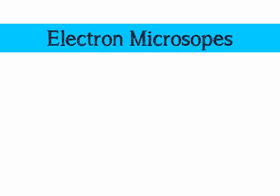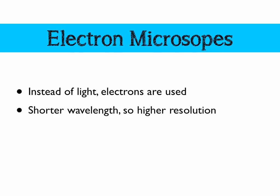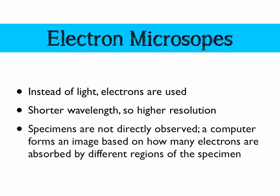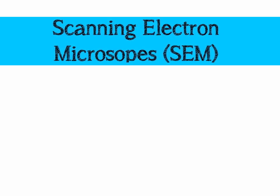Now let's start on electron microscopes. Instead of light, we use electrons. Electrons have a much shorter wavelength, which allows us to resolve things that are much closer together, giving us a much higher resolution. We don't look directly at the specimens — there's no eyepiece on an electron microscope. Instead, a computer is attached and forms an image based on the density of electrons absorbed by different areas of the specimen. The first electron microscope we'll look at is the scanning electron microscope, or SEM.